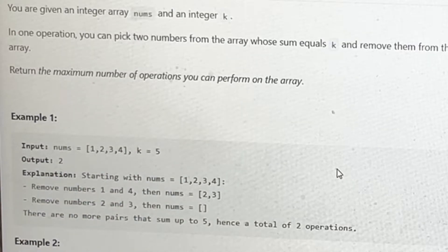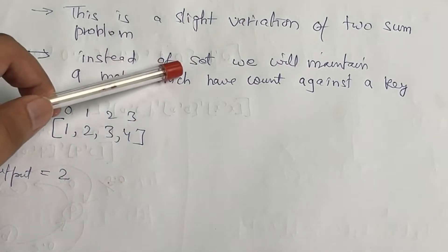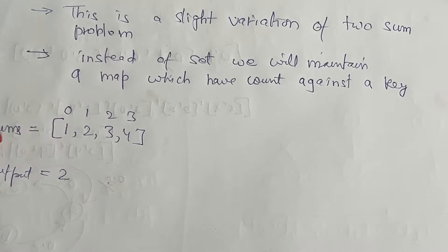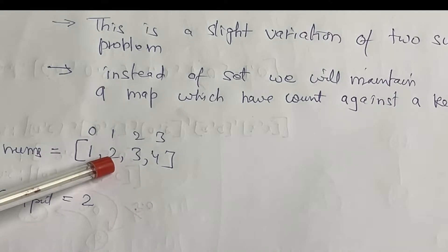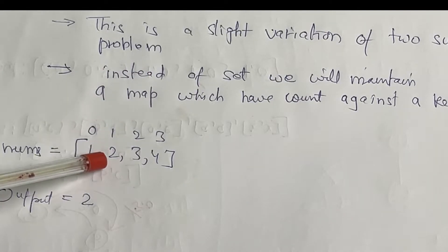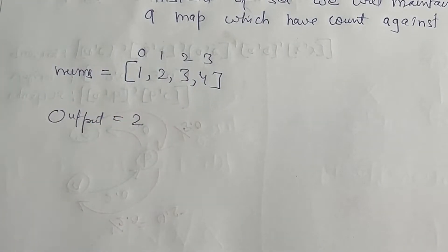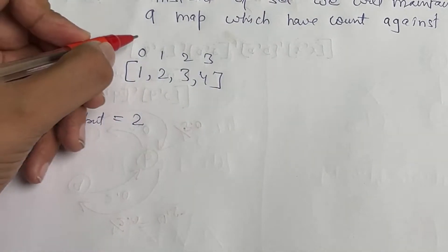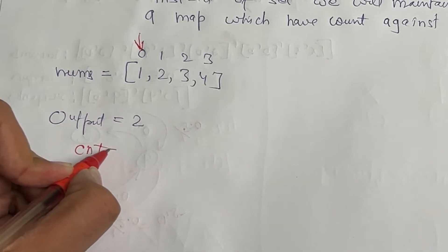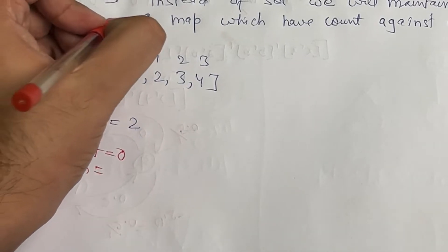Now let's see the intuition. This is a slight variation of the two-sum problem. Instead of a set, we will maintain a map which stores the count of each element present in the nums array. For example, if the value two appears two times, we store two against the key two in the map. We will also have a count variable.